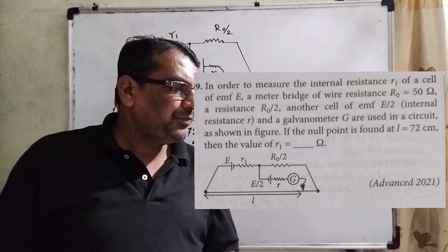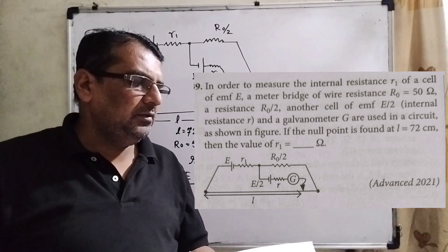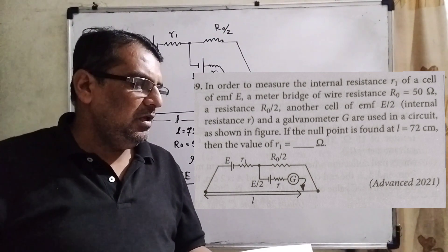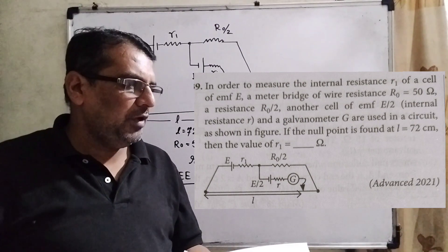Here is the question. In order to measure the internal resistance R1 of a cell of EMF E, a meter bridge of wire resistance R0 equal to 50 ohms is used.